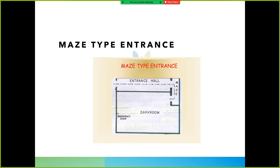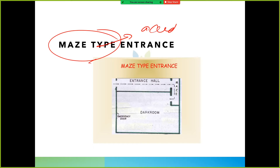So how to check if there is a light leak - we will discuss that later. But let's study maze type entrance. In the maze type entrance, even if someone accidentally lets in a little light, the darkroom is still unaffected. This is the maze pattern - the entrance hall is separate from the darkroom, so no light reaches inside.